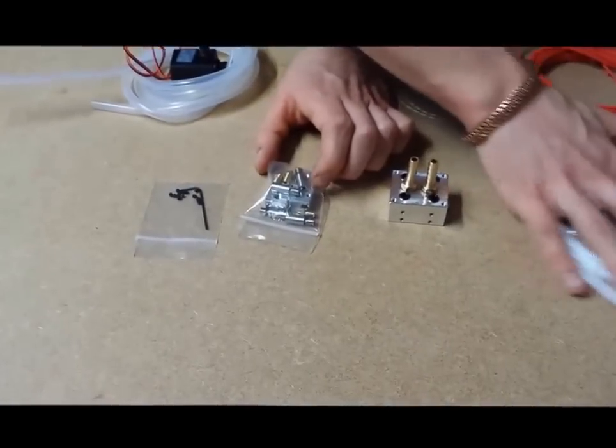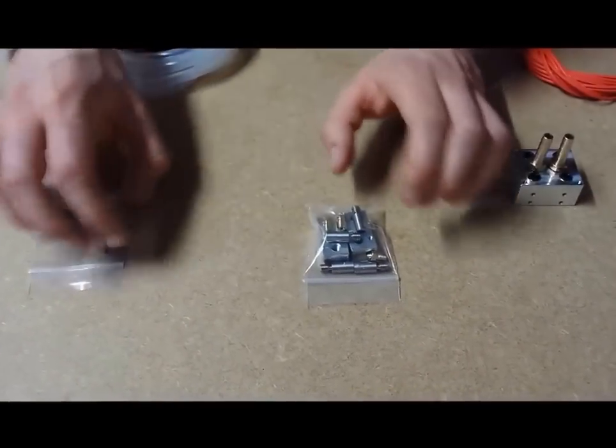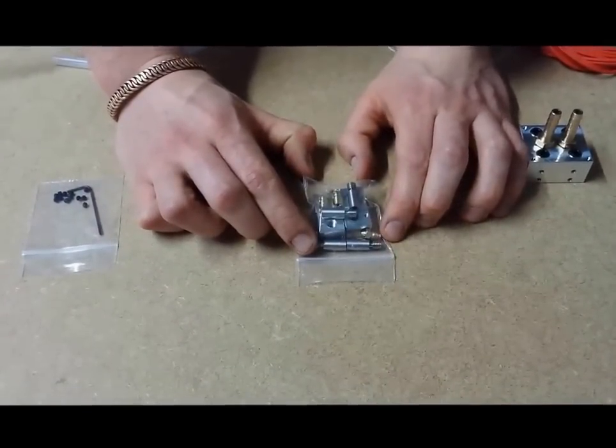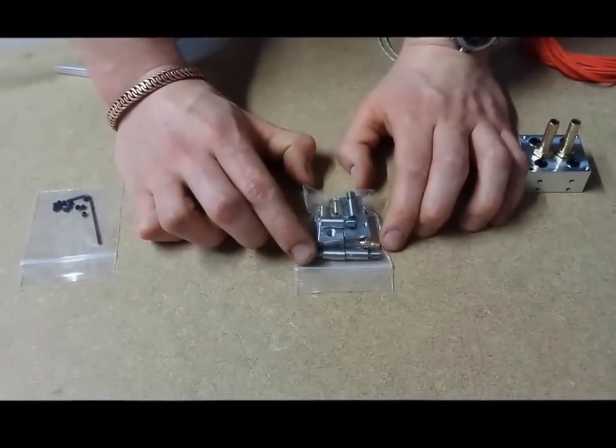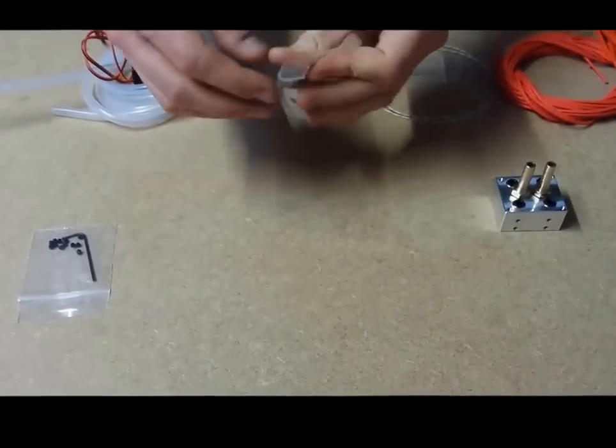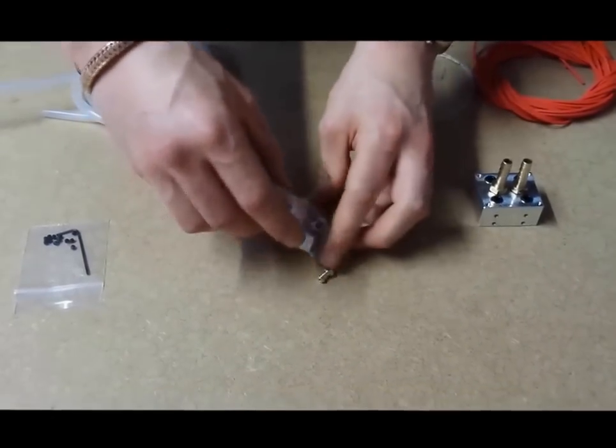So over here we've got a little pack which contains the Kraken heat brakes, standard 0.4mm nozzles for 1.75 filament and standard V5 heater blocks. So I'll take these out of the pack here and show you how they all go together.